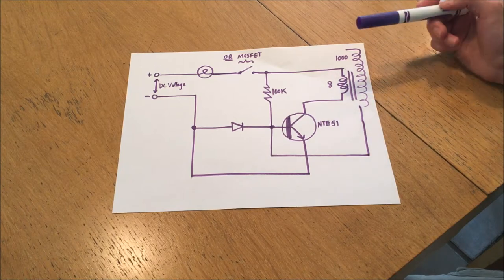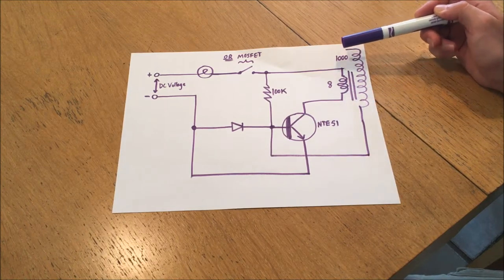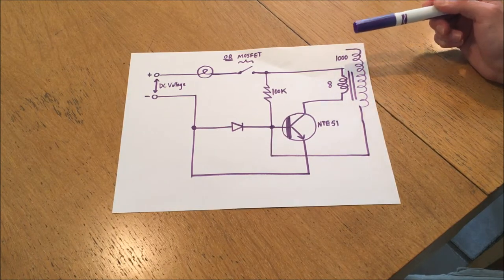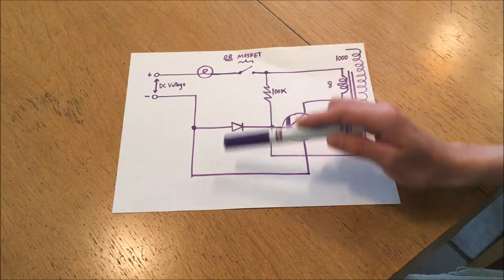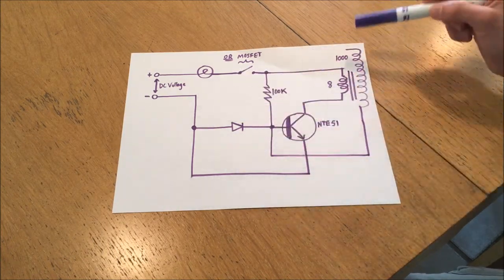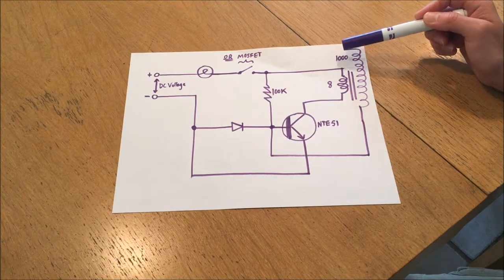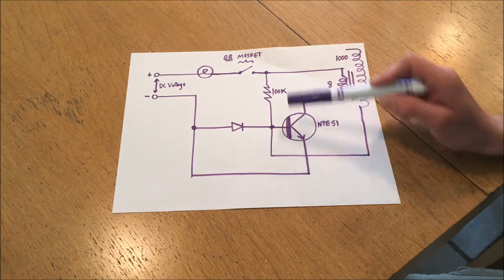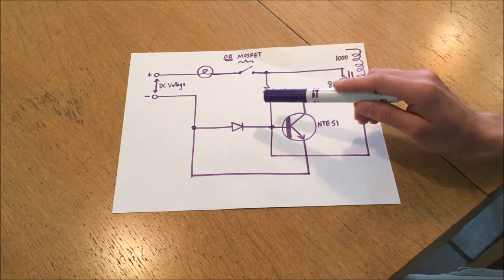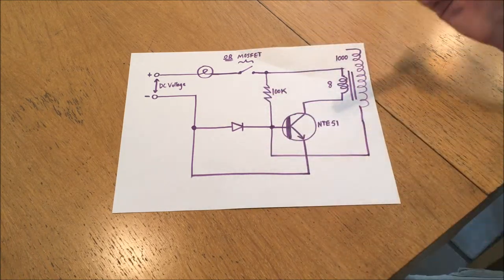Actually, the real interesting thing about this Slayer-exciter circuit is that it relies on the capacitance between the end of the Slayer coil and the entire circuit below. This is actually connecting through a very weak capacitive link to the ground, positive, and pretty much everything in the circuit, just through the air.